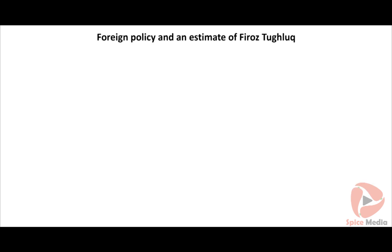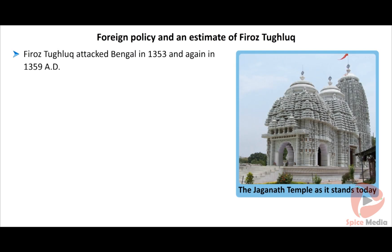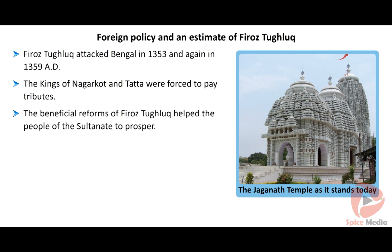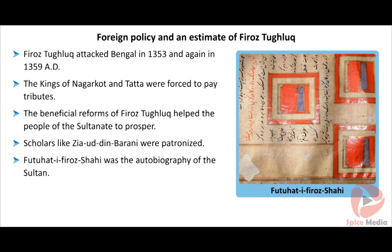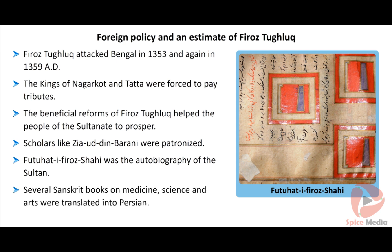Firoz Tughlaq attacked Bengal in 1353 and again in 1359 AD. He conquered Jainagar and demolished the Jagannath Temple at Puri. The kings of Nagarkot and Tata were forced to pay tributes. The beneficial reforms of Firoz Tughlaq helped the people of the Sultanate to prosper. Scholars like Ziauddin Barani were patronized. Futuhati Firoz Shahi was the autobiography of the Sultan. Several Sanskrit books on medicine, science and arts were translated into Persian. One such book was a book on physics titled Kutab Firoz Shahi.